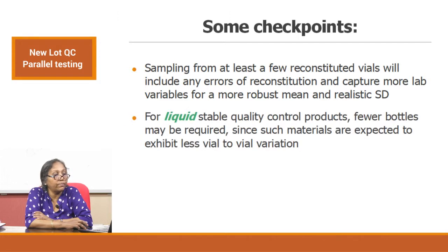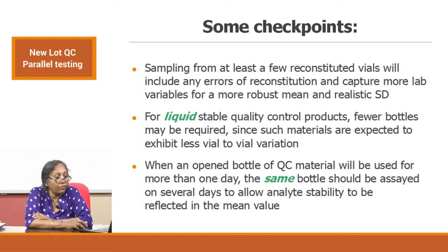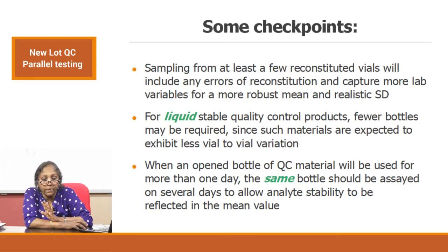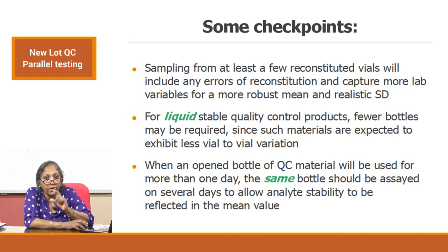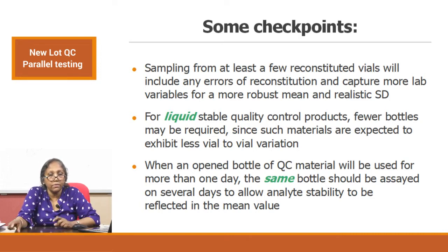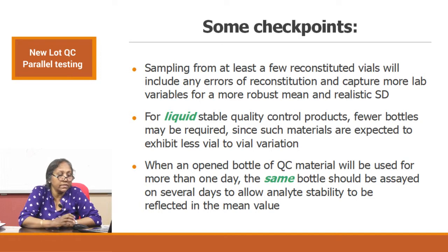For liquid stable quality products like hematology controls, fewer bottles may be required as such materials exhibit less vial-to-vial variation. When an open bottle of QC material will be used more than one day, the same bottle should be assayed on several days to allow any allied stability to be reflected in the mean. Storage variability and fridge temperature variations will be captured day-to-day. Using the same vial over multiple days along with taking multiple vials ensures different kinds of variables are captured in your mean and standard deviation.